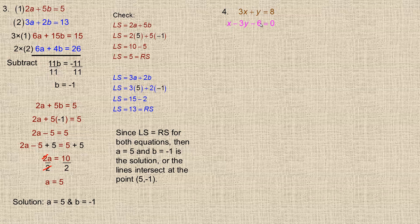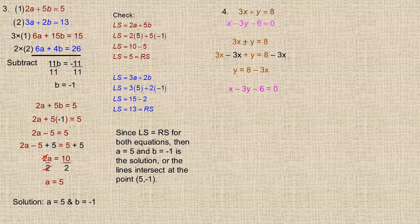For the last example, number 4, you could isolate either y or x conveniently since both have coefficients of 1. I'm going to solve the first equation for y. The y has 3x added to it, so subtracting 3x from both sides gives y equals 8 minus 3x. Now I'll substitute into the second equation.